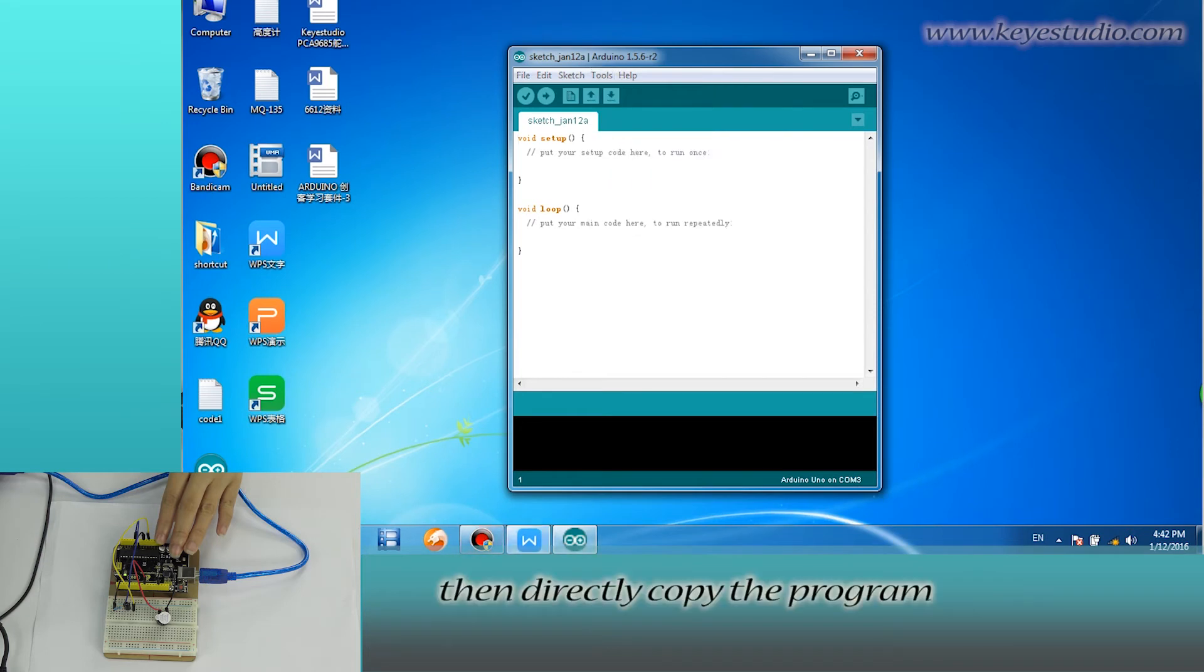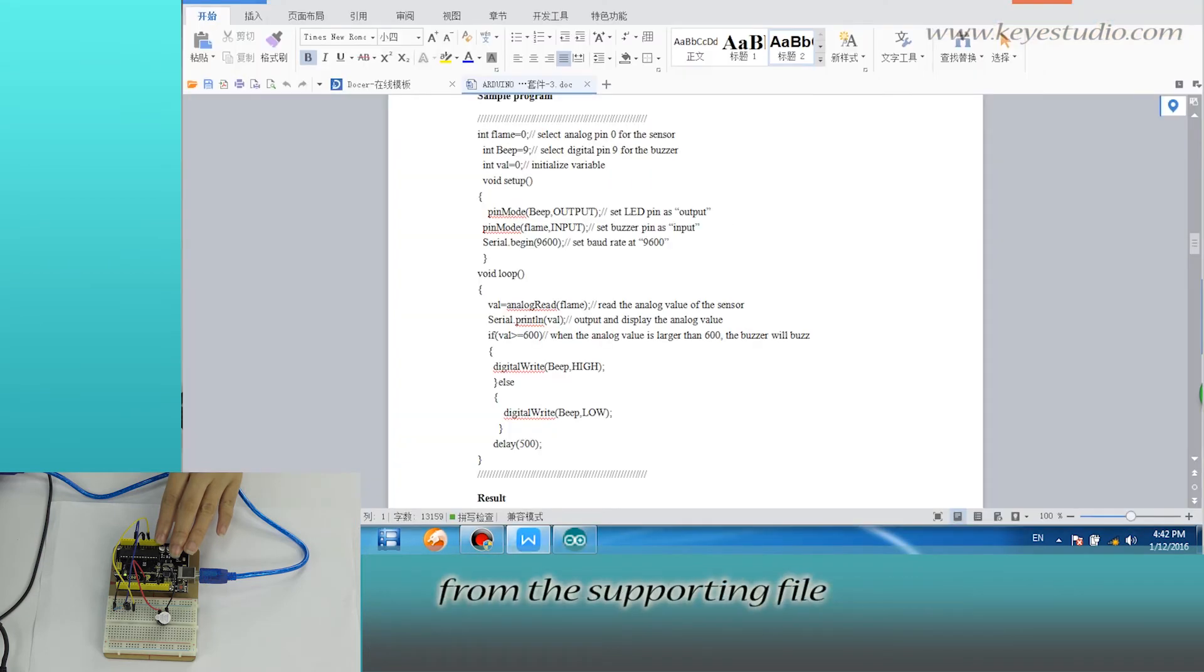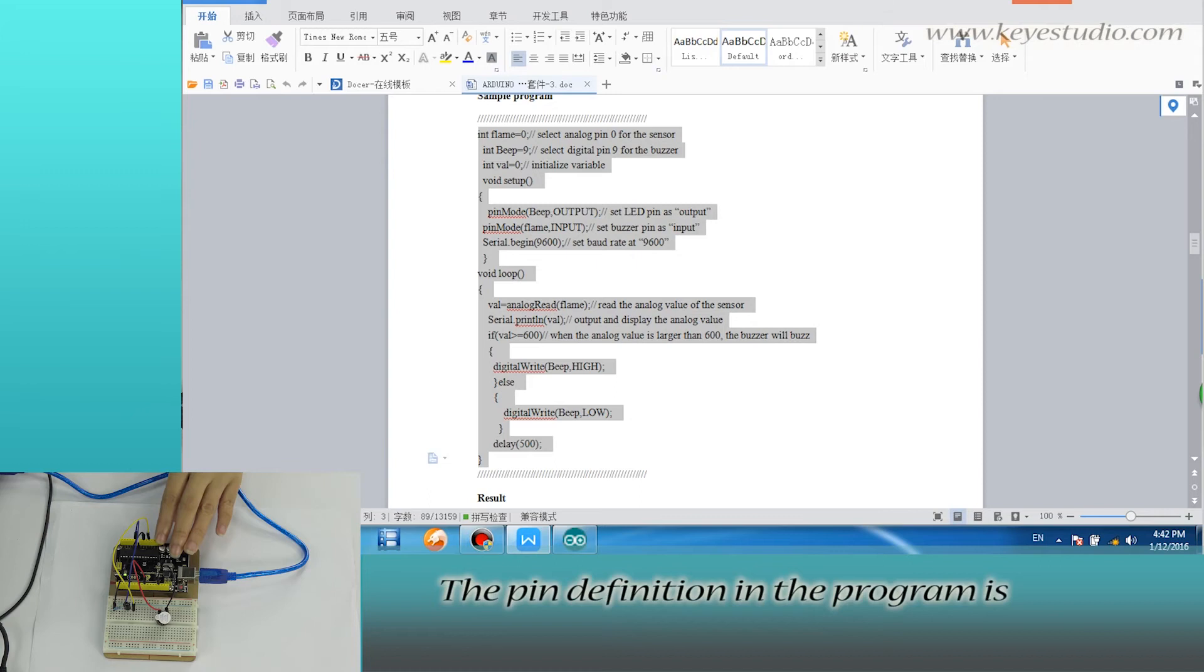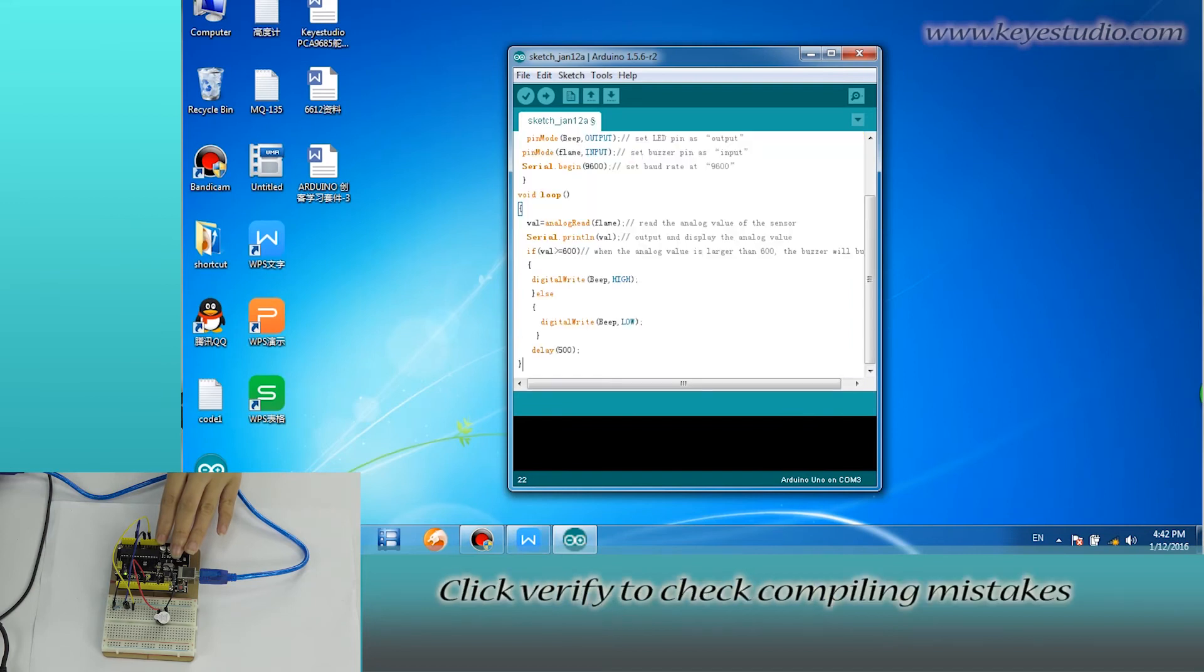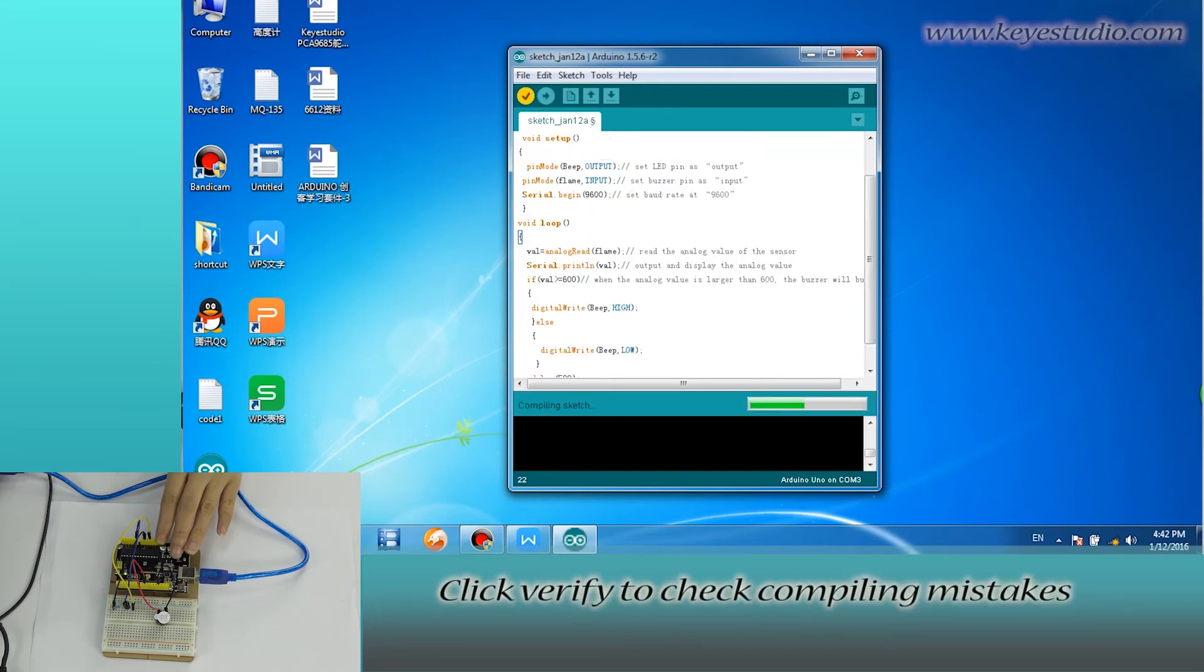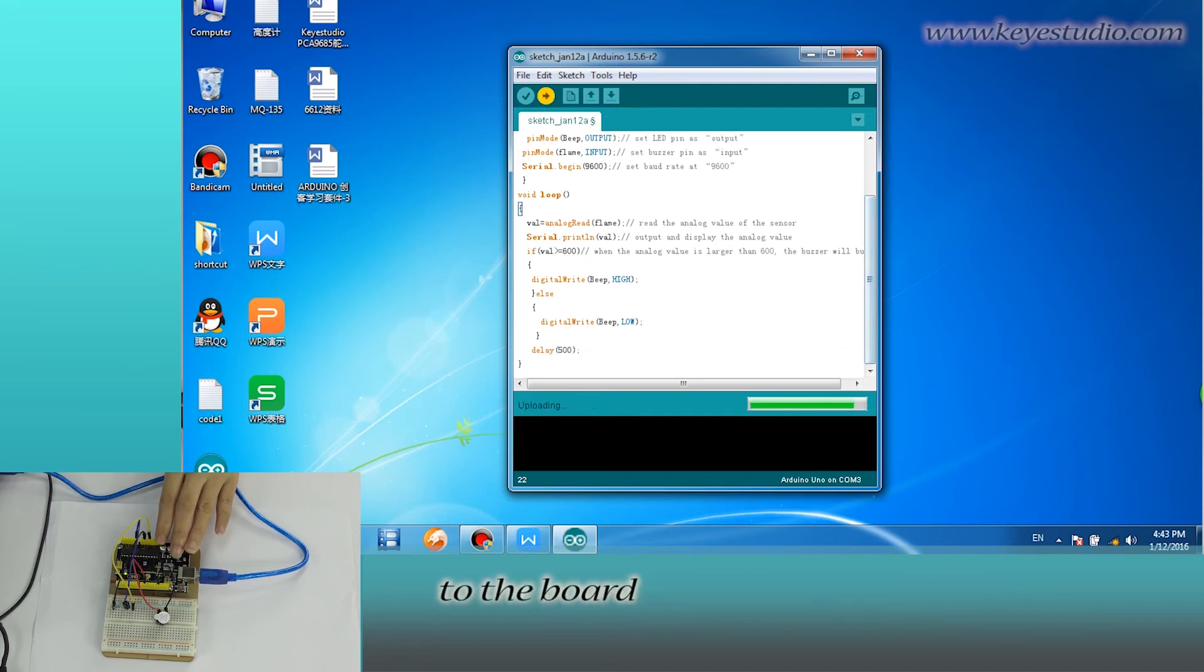Then, directly copy the program from the supporting file. The pin definition in the program is according to the circuit connection. Paste the program here. Click verify to check compiling mistakes. If codes are correct, click upload to upload the program to the board.